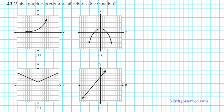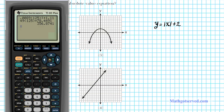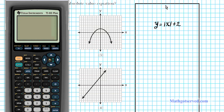Let's take a look at number 23. It says which graph represents an absolute value equation? There are different ways you can do this. If you remember what your family of curves look like, this is easy to determine automatically. Another way is by writing down an absolute value function — y equals absolute value of x, let's shift it up by 2 units. Plug it in the calculator and then ask yourself which of the answer choices looks similar to what you graphed.